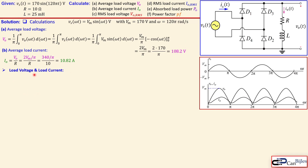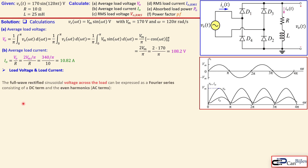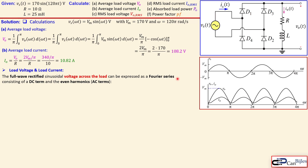Looking at the load voltage and load current in more detail, the full-wave rectified voltage at the output can be expressed using a Fourier series. That has a DC term and a series of AC terms — in this case, only the even harmonics: 2, 4, 6, and so on. Mathematically, Vo_avg is the DC or average value of our load voltage, and the summation covers all the even AC harmonic terms.